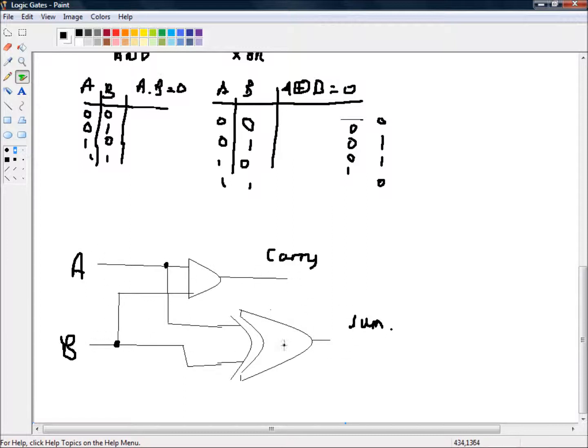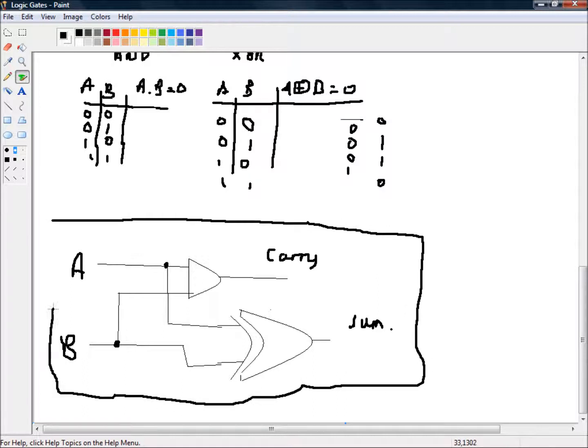Now, we've got a kind of a one-digit adder. We can add two single-digit binary numbers together. This whole circuit, then, is what we call a half adder.